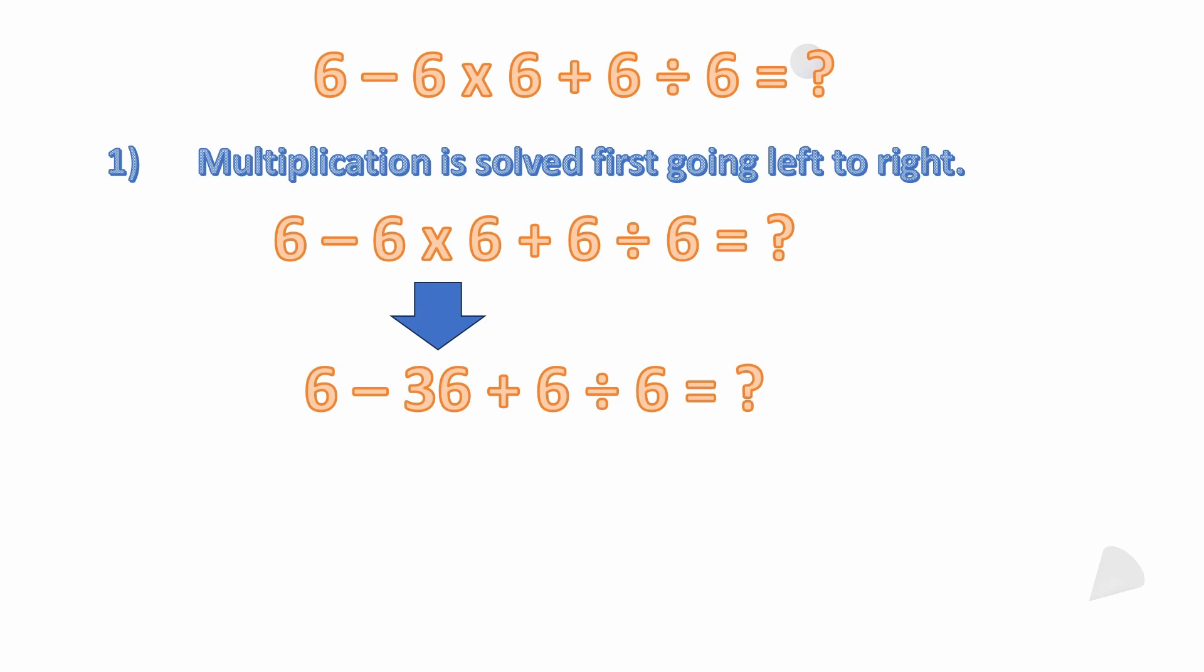Here in this problem, we're going left to right, we see that we run into multiplication before we run into division. We do not do the subtraction first, because multiplication and division have higher precedent. The very first operation is going to be 6 times 6. And you can see here how I have the arrow dropping down. The problem now becomes 6 minus 36 plus 6 divided by 6.